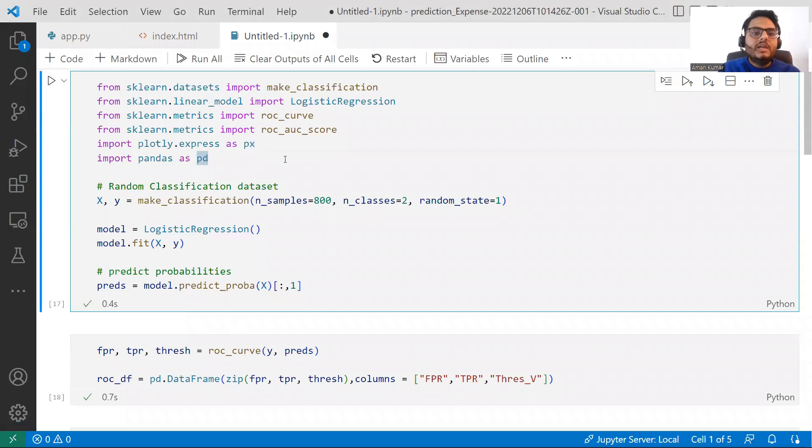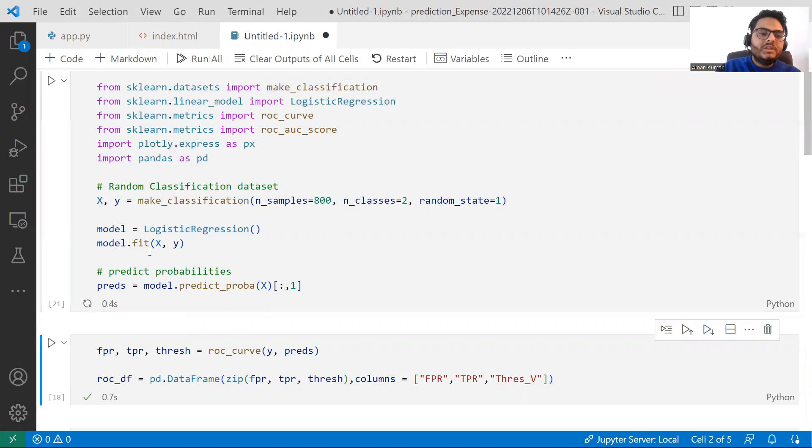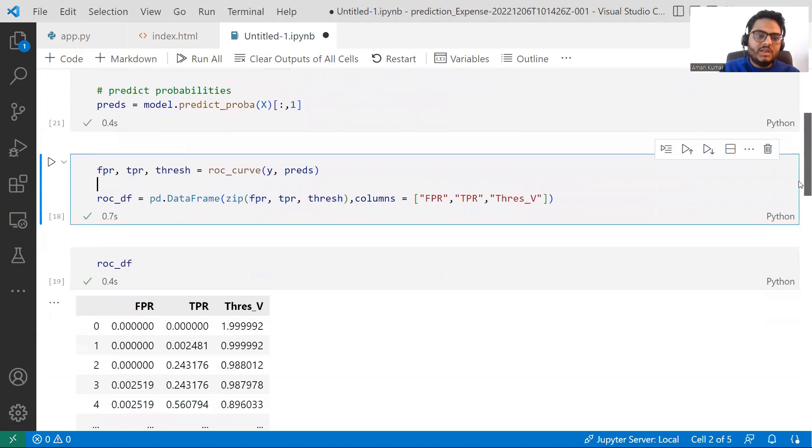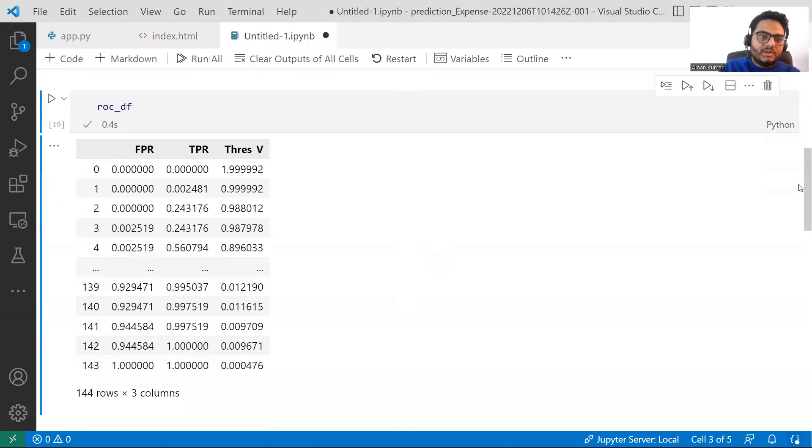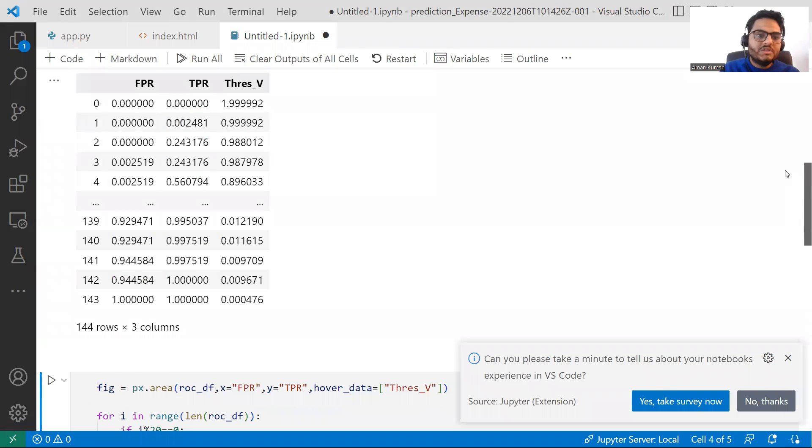So here, if you can see, I am taking a simple sklearn dataset, some logistic regression model, metric, and ROC AUC score. I am taking something to plot that is an interesting plot you will see towards the end. I am doing a classification data generating, logistic regression, and fitting. Model is fit.